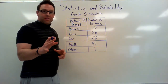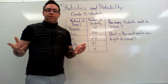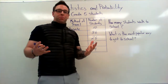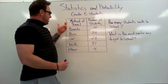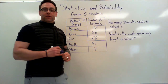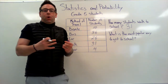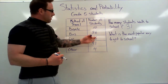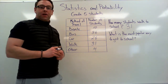Let's see what we do next with the data in the table. Now that we've looked at how the data is organized, we're going to use it to answer a few questions about this group of people. The first question: how many students walk to school? We can clearly see from our data — we find 'walk,' go across, and we have 31 students who walk to school. The next question: what is the most popular way for students to get to school? Looking at the numbers, the biggest is 36, and it looks like the bus is the most popular way.